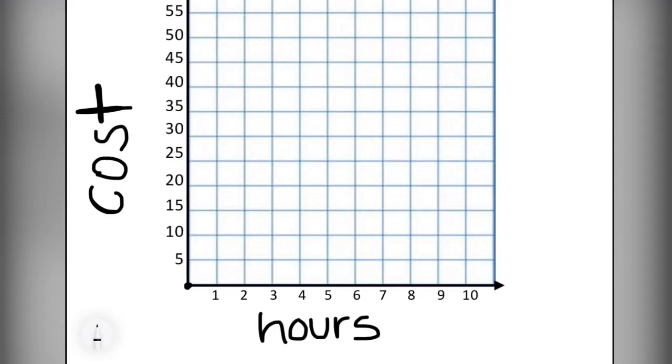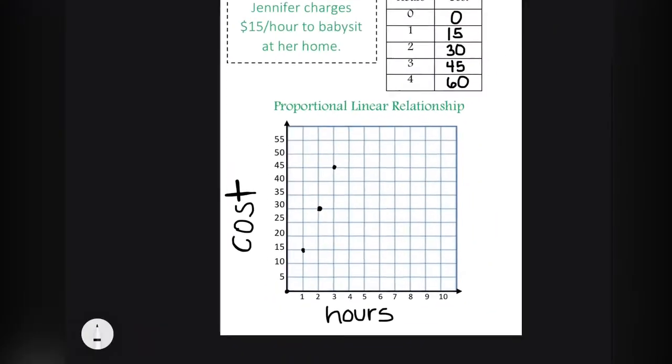And the y-axis will be the cost or her fee. Remember, if she works zero hours, she's getting paid $0. For one hour, it's $15. For two hours, it's $30. For three hours, it's $45.